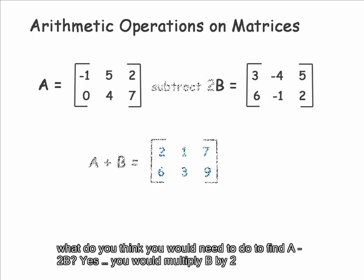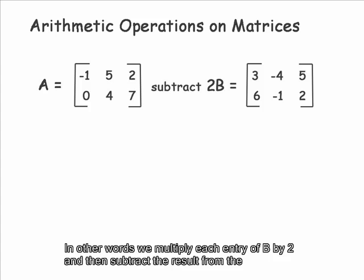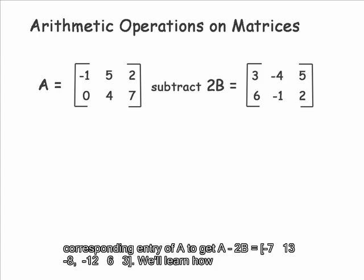Now, what do you think you would need to do to find A minus 2B? Yes, you would multiply B by 2 and then subtract it from A, but you could also perform this operation entry by entry. In other words,